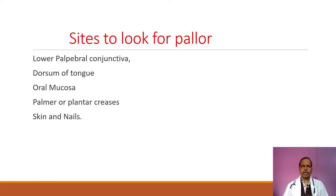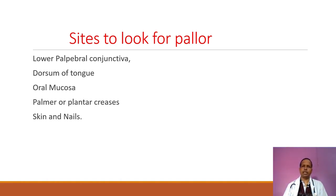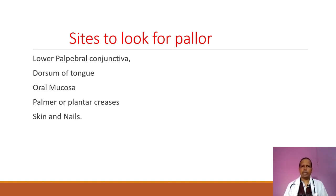Now, what are the sites we should examine for pallor? Number one is the lower palpebral conjunctiva — ask the patient to look upwards, gently pull the lower eyelid downward, and examine for pallor. Number two is the dorsum of the tongue — ask the patient to protrude the tongue, and if there is severe anemia you can observe pallor when the tongue is shown.